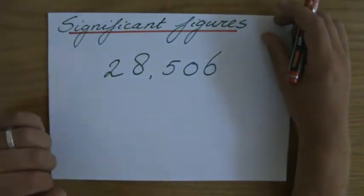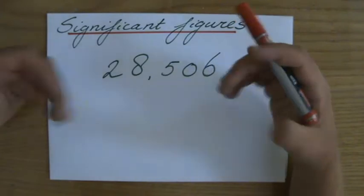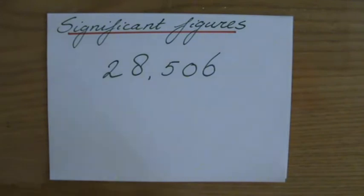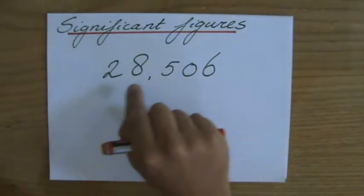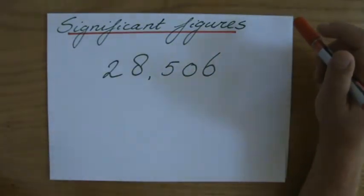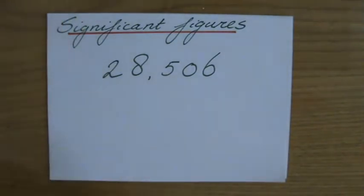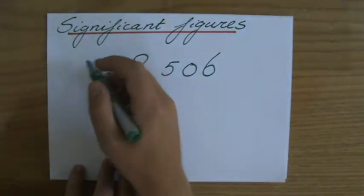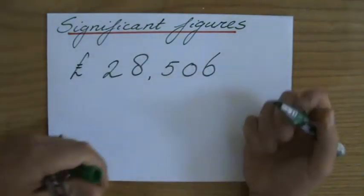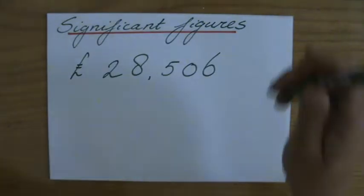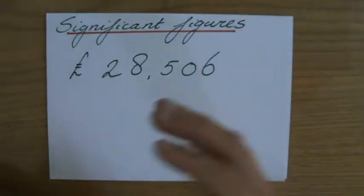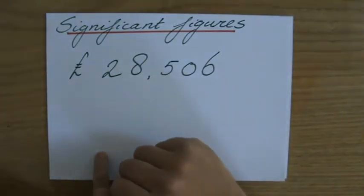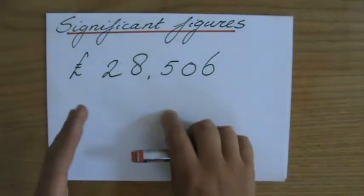Welcome to this very important video which will explain to you the concept of significant figures. I've written down a number: 28,506. Let's just imagine that that is the money on my bank account. I do not have that kind of money, but let's say I do — let's dream a little bit. I have 28,506 pounds, dollars, euros, or yen on my bank account.